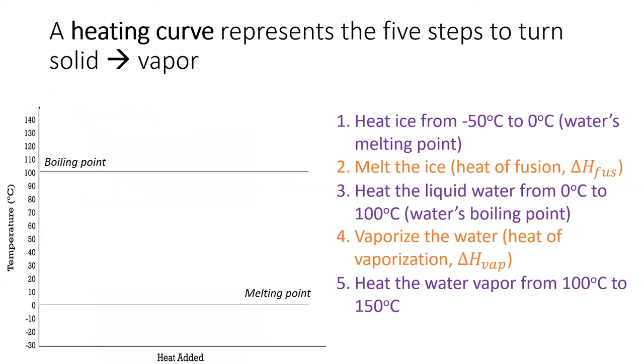This might make more sense if we represent it graphically on something called a heating curve. The temperature is on the left axis and the amount of heat added is on the bottom axis. The first step heats our very cold ice up to the melting point. This step corresponds to a q equals mc delta t equation.